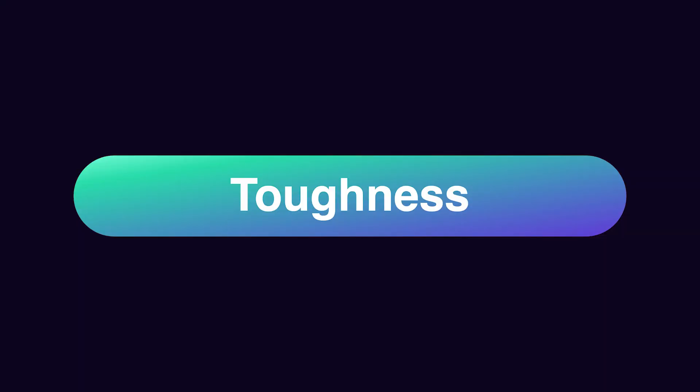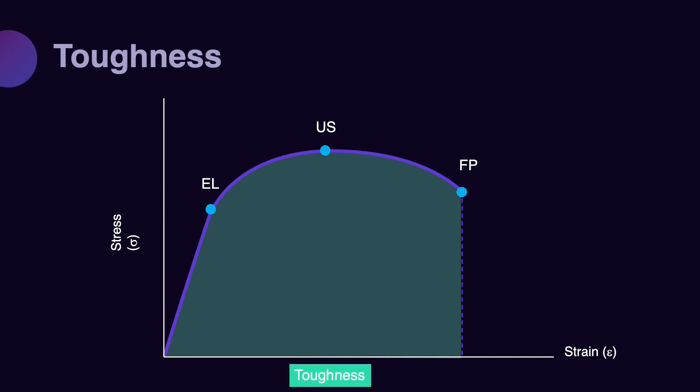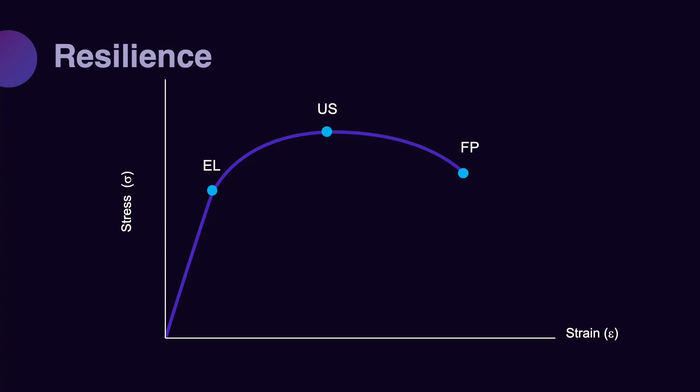The other terminology I'd like you to be familiar with is toughness. The amount of energy that we can transfer to the material before its failure point defines how tough that material is. If the graph of a material extends significantly toward the right until the failure point, that material can accept a lot of energy before it breaks — such as metal. The amount of energy required until the elastic limit is called resilience.